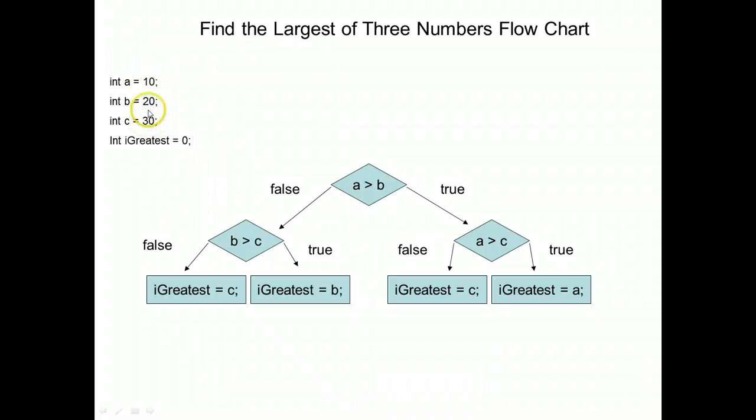We can see by quickly looking at it, C is the largest value. We also have an integer called iGreatest, which is zero.